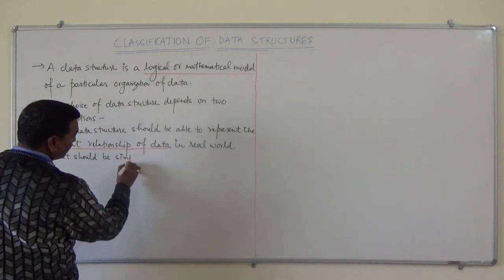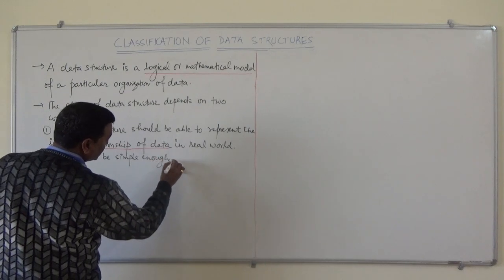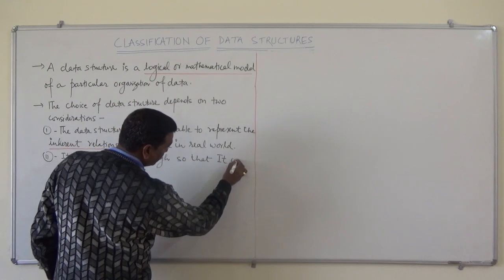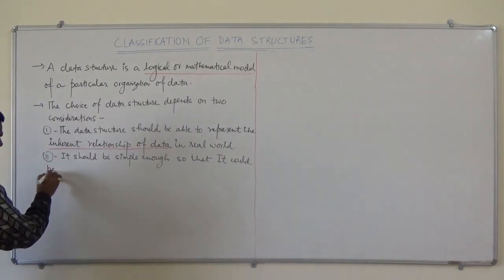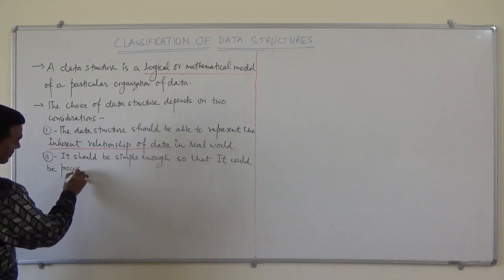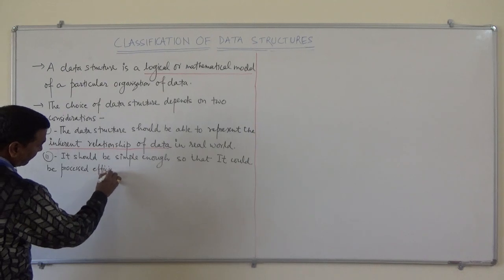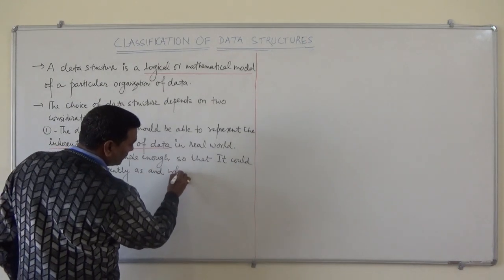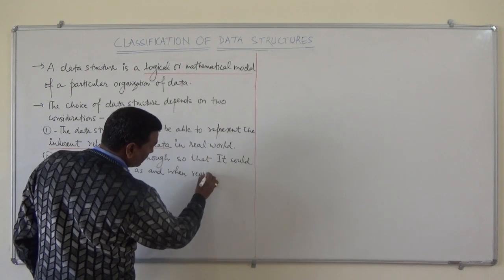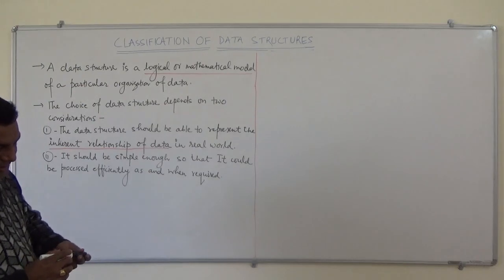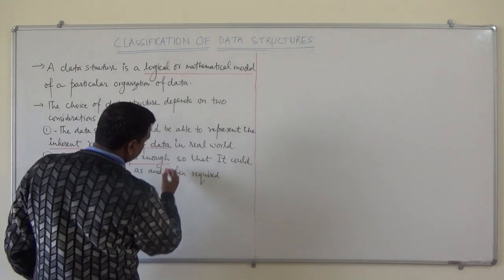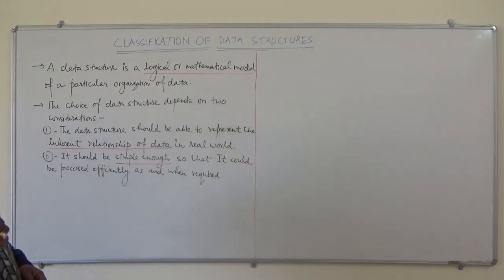The second consideration is that it should be simple enough so that it could be processed efficiently as and when required. The selection of the data structure should be very simple so that whenever it is required it should be processed in some efficient manner. So these are the two considerations whenever we want to choose a data structure.